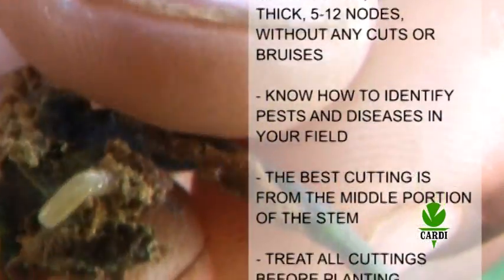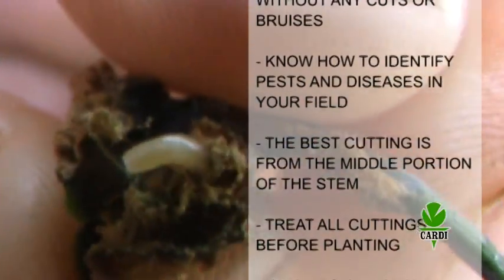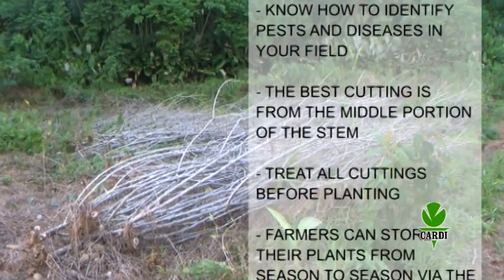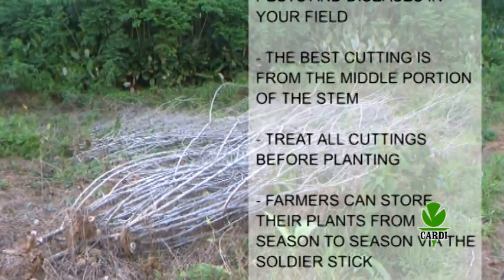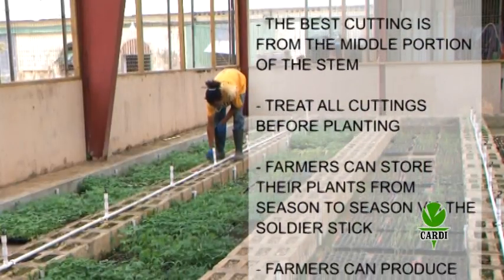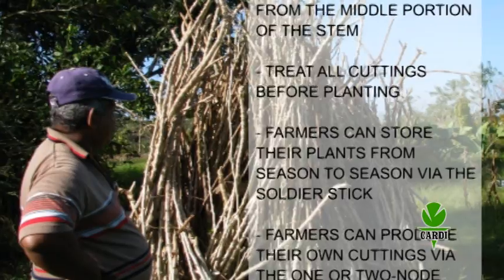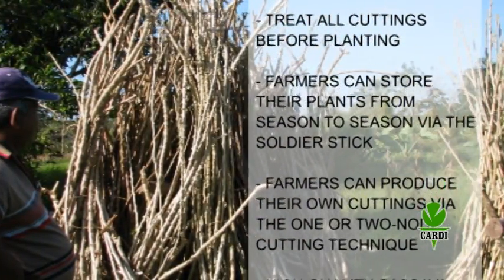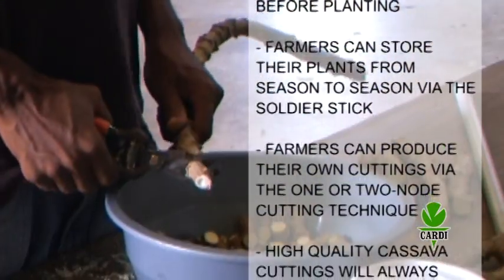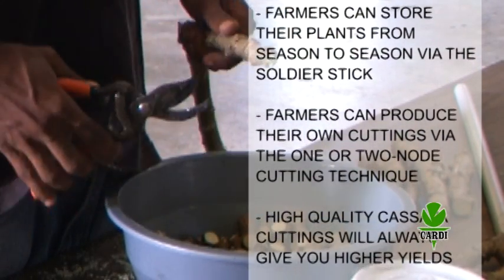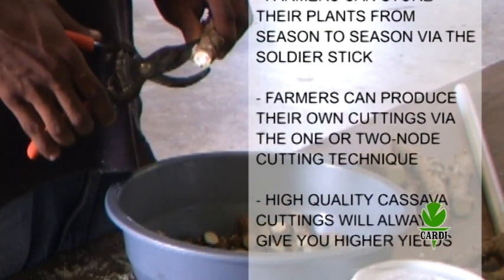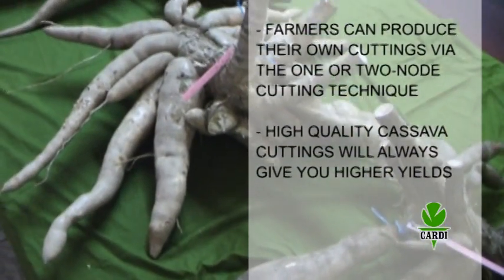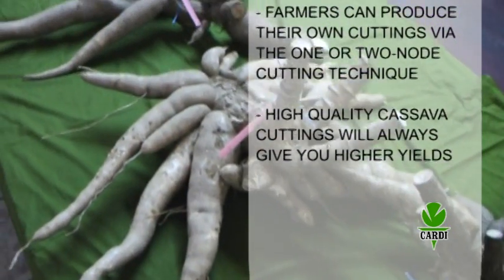Know how to identify pests and diseases in your field. The best cutting is from the middle portion of the stem. Treat all cuttings before planting. Farmers can store their plants from season to season via the soldier stick. Farmers can produce their own cuttings via the mini-set technique. High quality cassava cuttings will always give you higher yields.